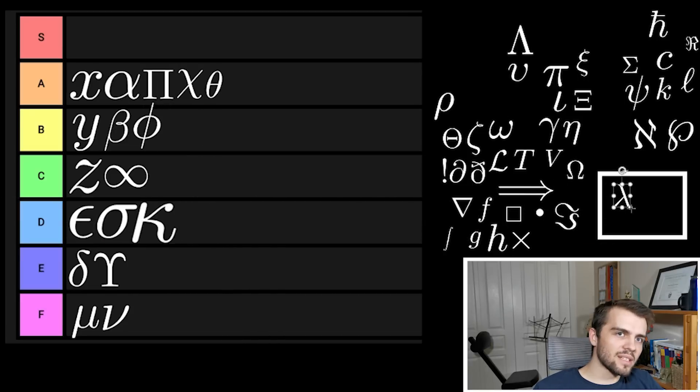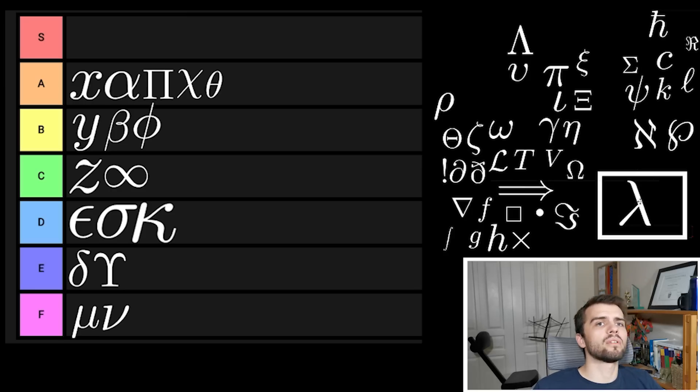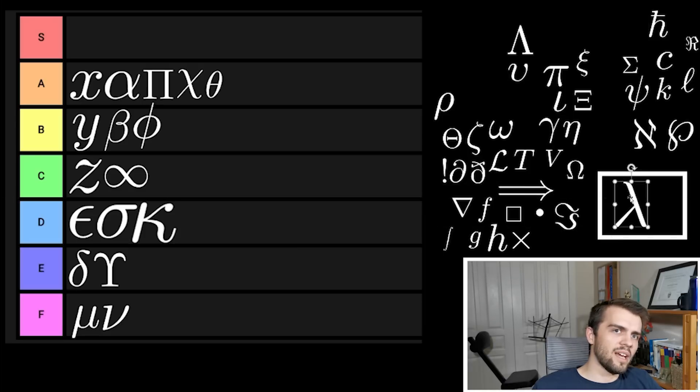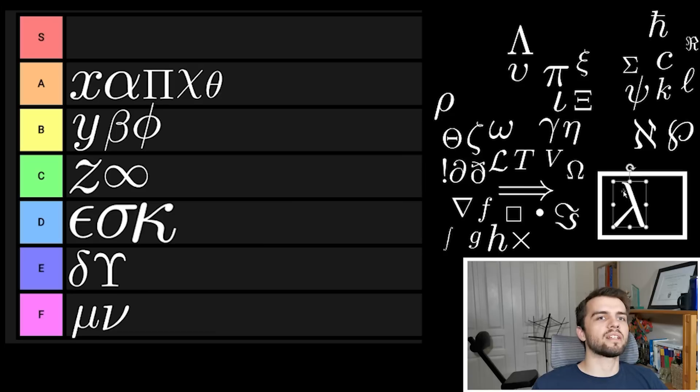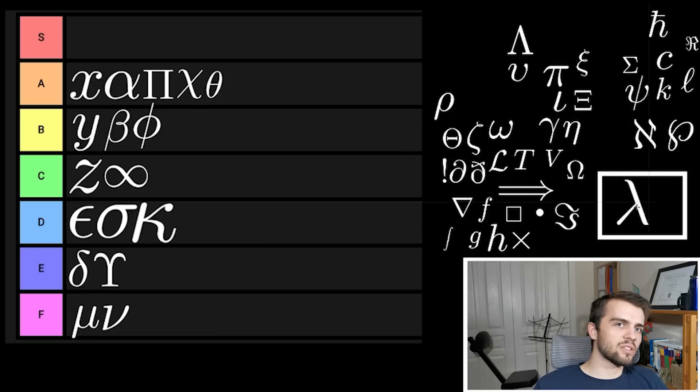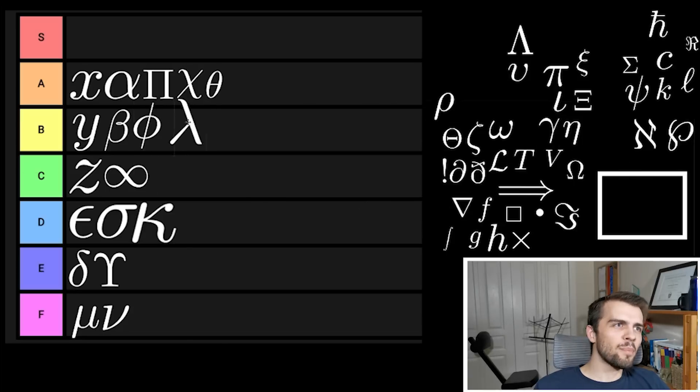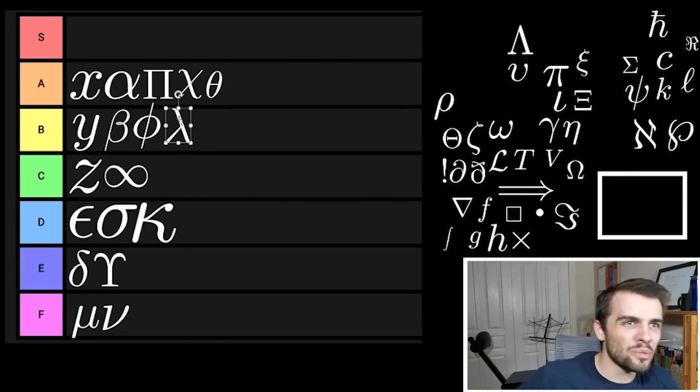I feel like lambda is kind of one of the first symbols that you ever deal with where you're beyond X and Y. You're in physics and it's like oh we're going to talk about wavelength. We're going to use this new symbol and you get all panicky. But I have to give it points for being structurally integral. I mean it's living in two dimensions, it's leaning, it's got this extra support here so it doesn't fall over. I'm going to put lambda B tier.